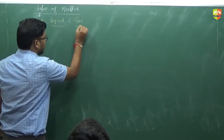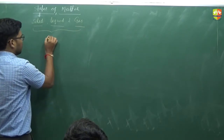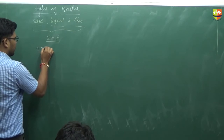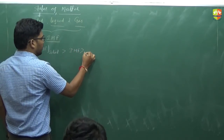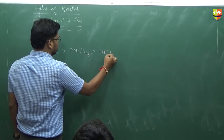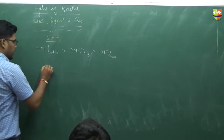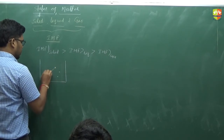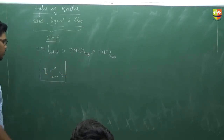What is the major difference between these three states of matter? The major difference is intermolecular force. The intermolecular force (IMF) for solid is maximum, then for liquid, and for gas it is minimal. Gaseous molecules have minimum intermolecular force of attraction — that's why gaseous molecules have random motion and travel in all directions randomly.